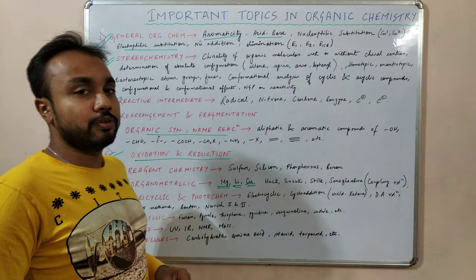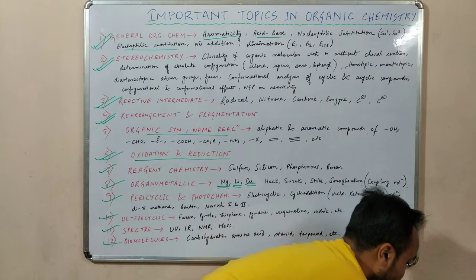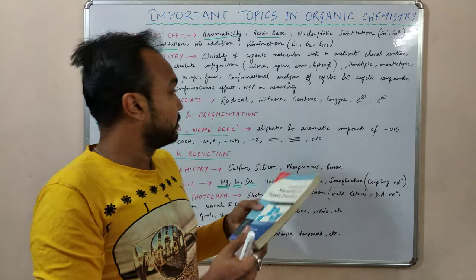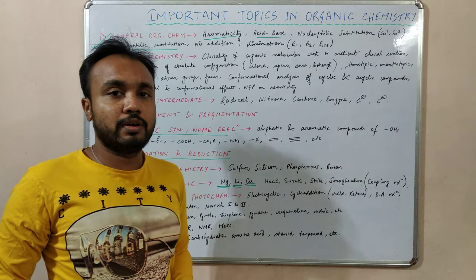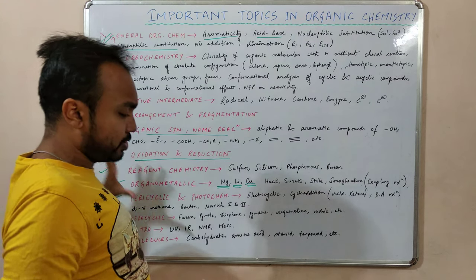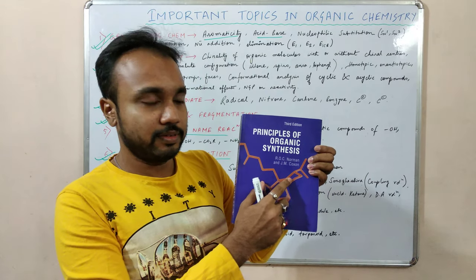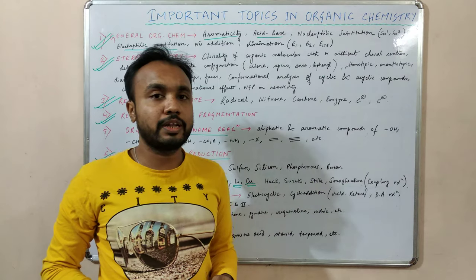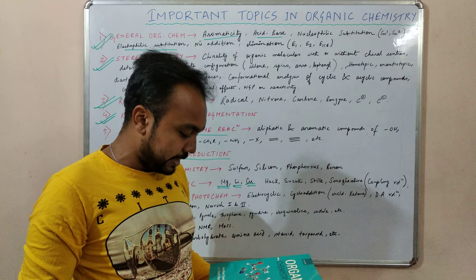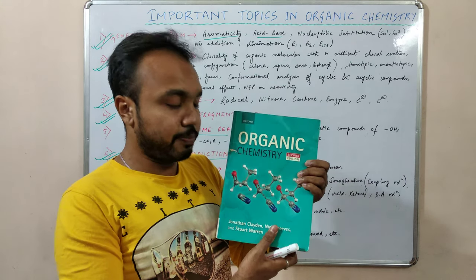I want to recommend some books based on these topics. For general organic chemistry, I suggest the book 'A Guide to Mechanism in Organic Chemistry' by Peter Sykes. For stereochemistry, you can follow books by Nasipuri or Subrata Sengupta. For reactive intermediates and reagent chemistry, you can follow 'Principles of Advanced Organic Chemistry' by Norman and Coxon, and also 'Modern Synthetic Reactions' by Carruthers. For the CSIR NET exam I also recommend referring to 'Organic Chemistry' by Jonathan Clayden as a textbook — it is a very popular and well-known book.